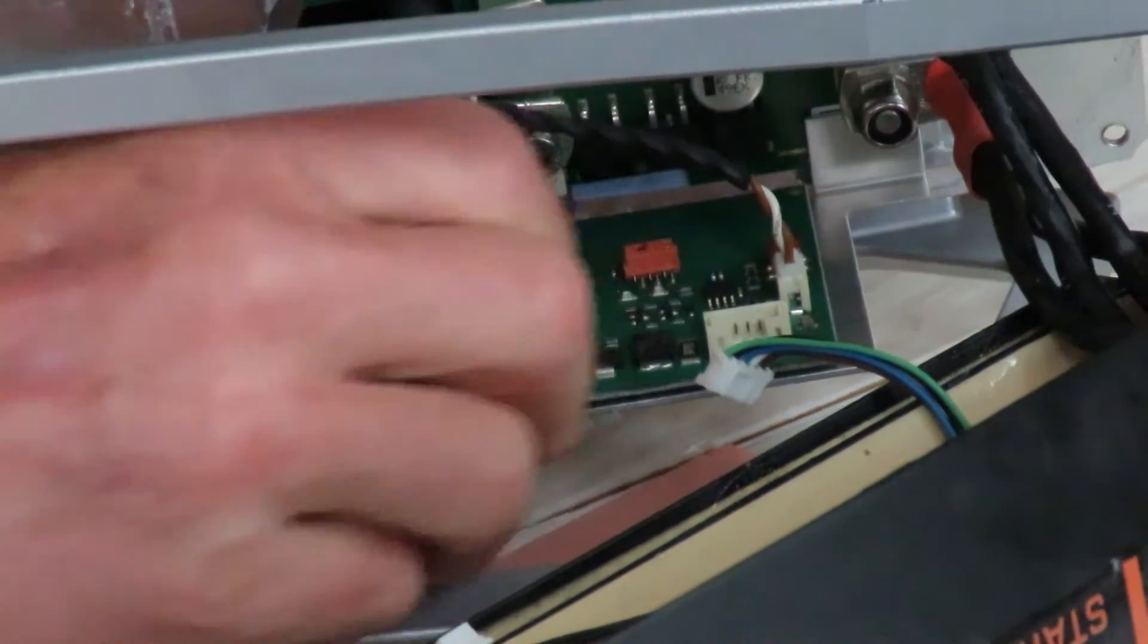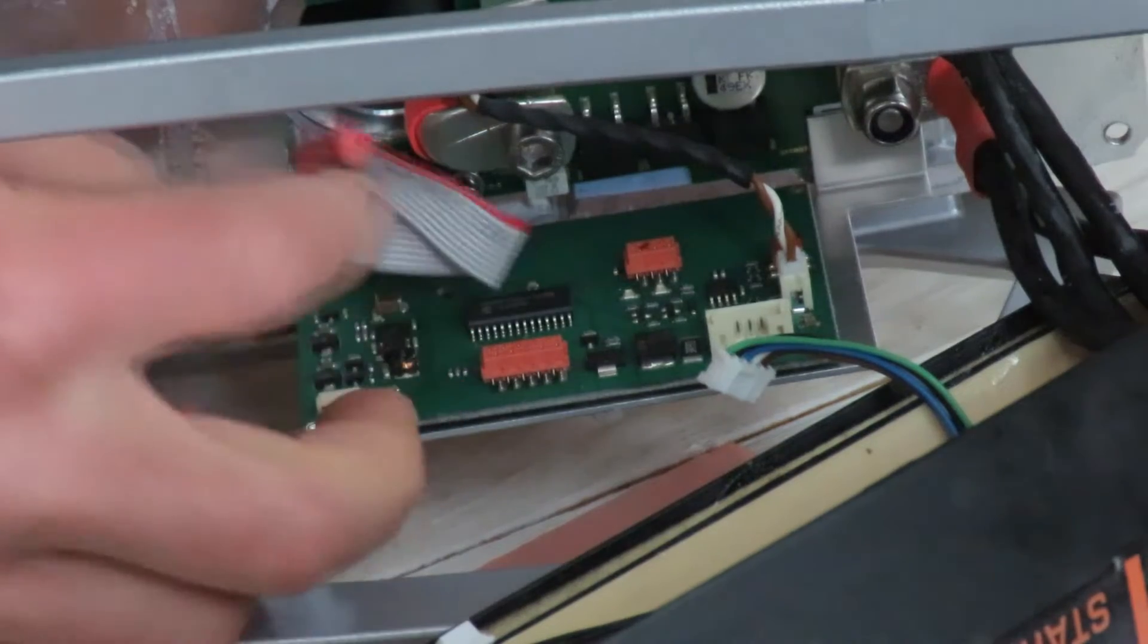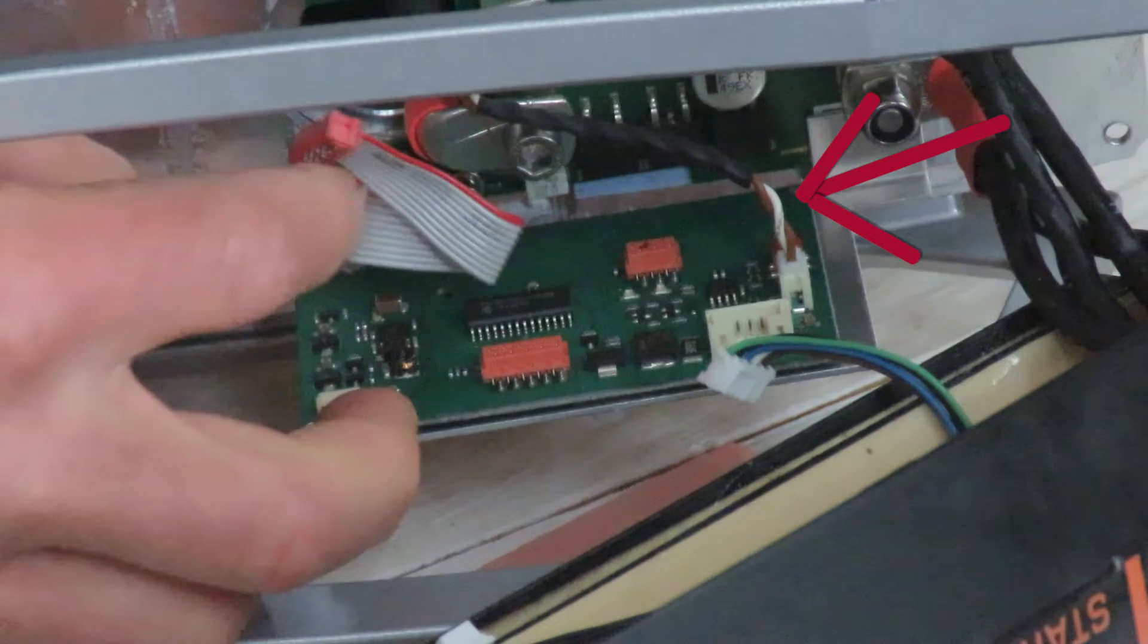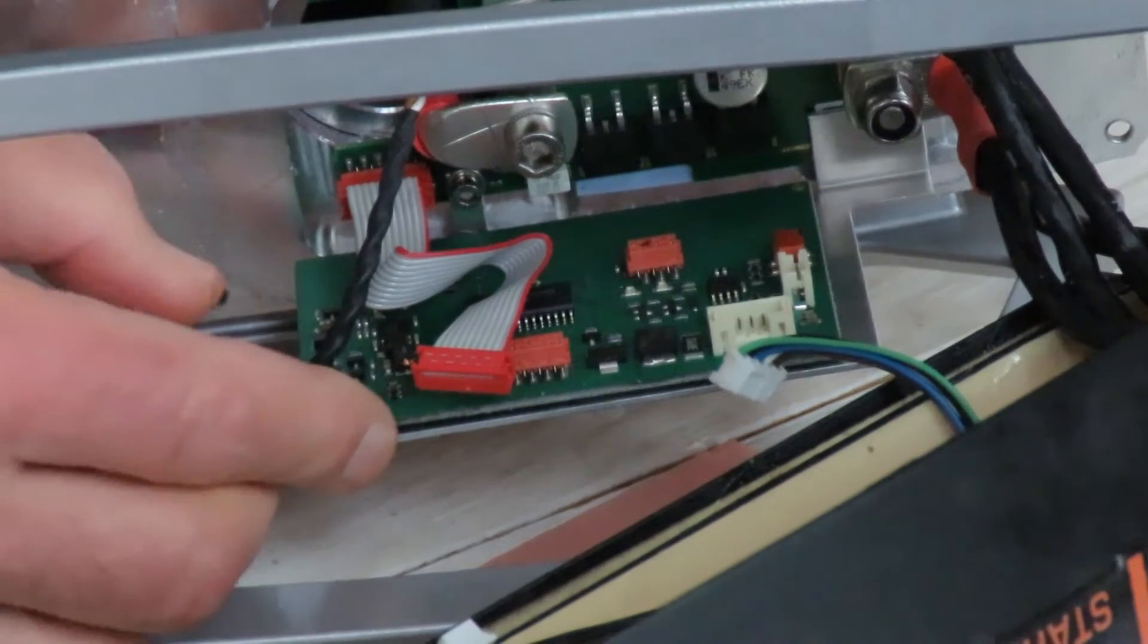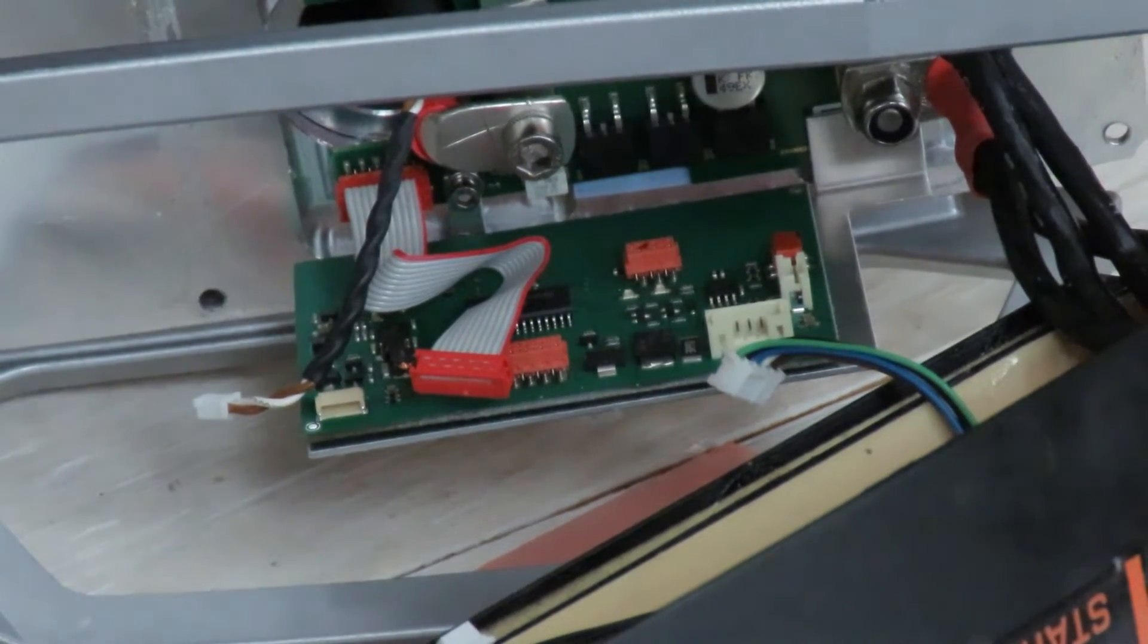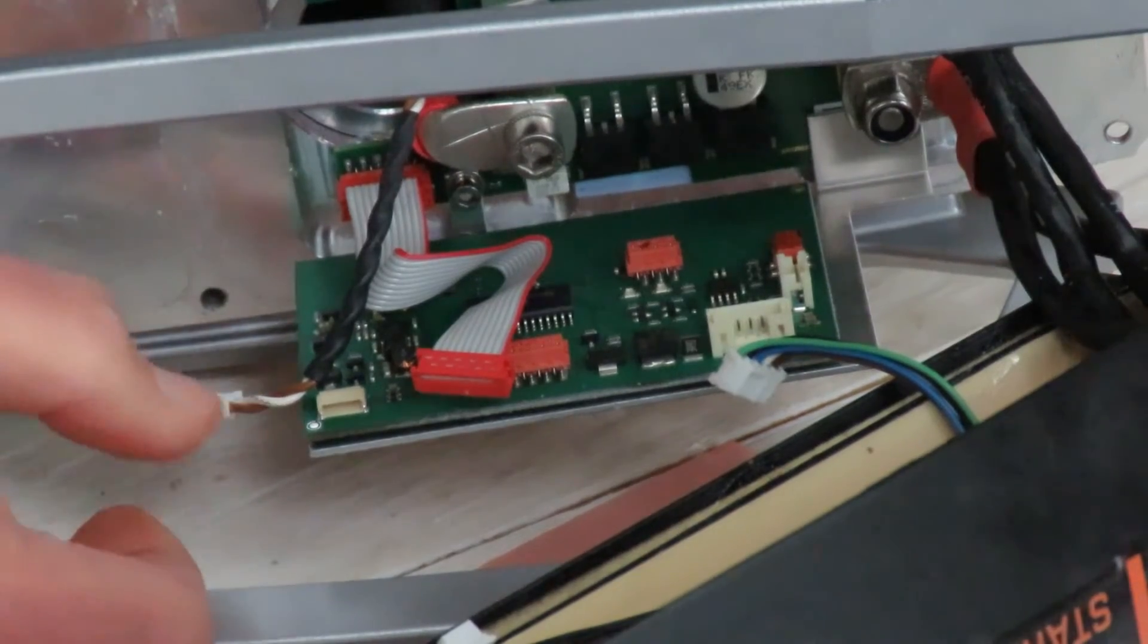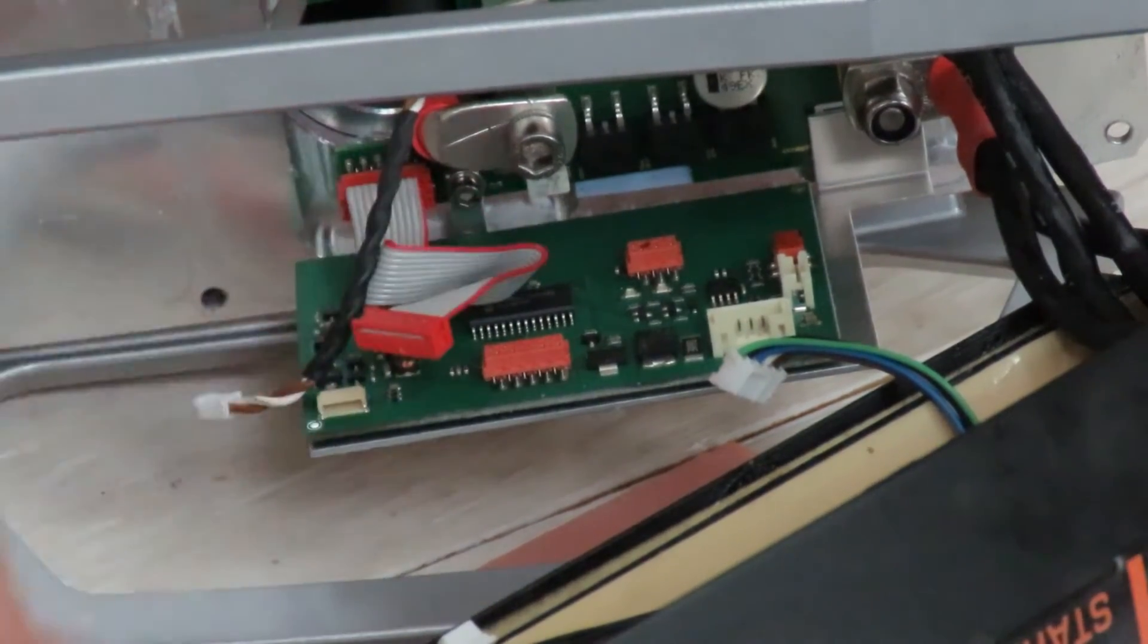So we're going to remove this ribbon cable. And we have one more cable connector to remove. Now the question becomes, how is this board held on? I think it's held on with double stick tape, because if you look at this board there's no mounting hardware here.